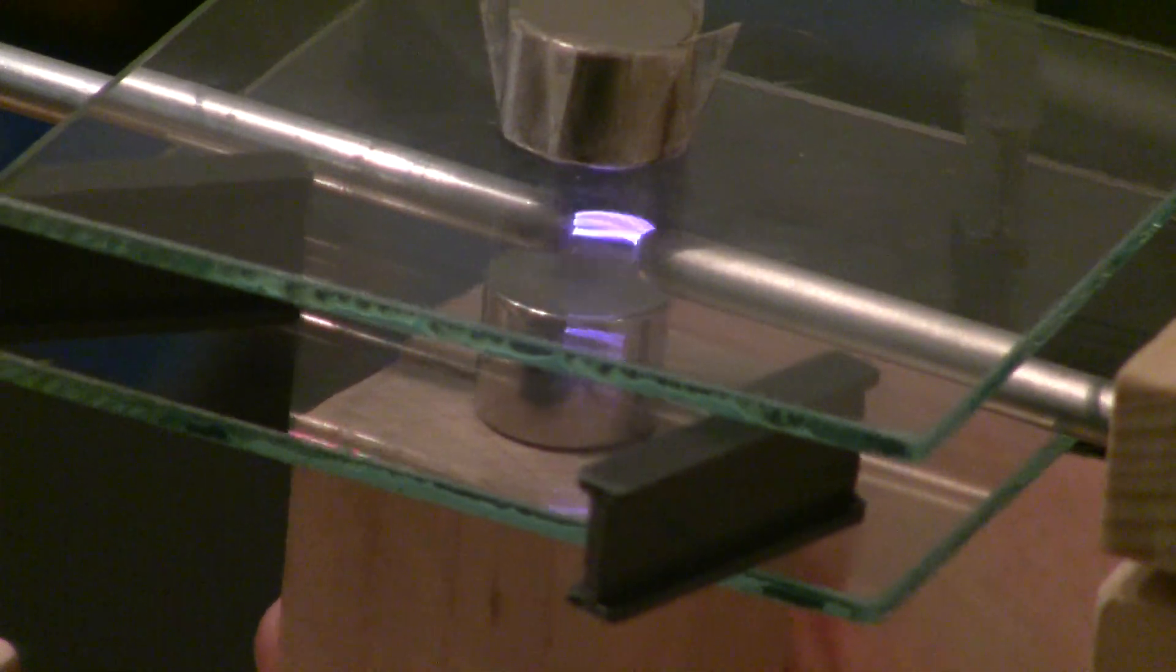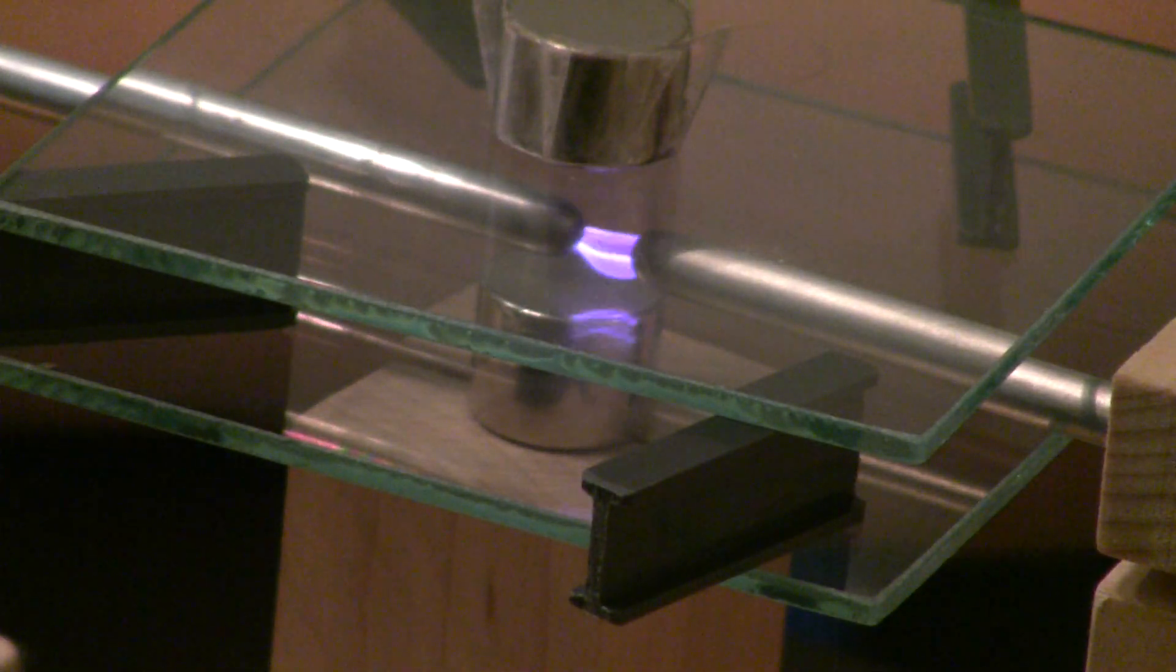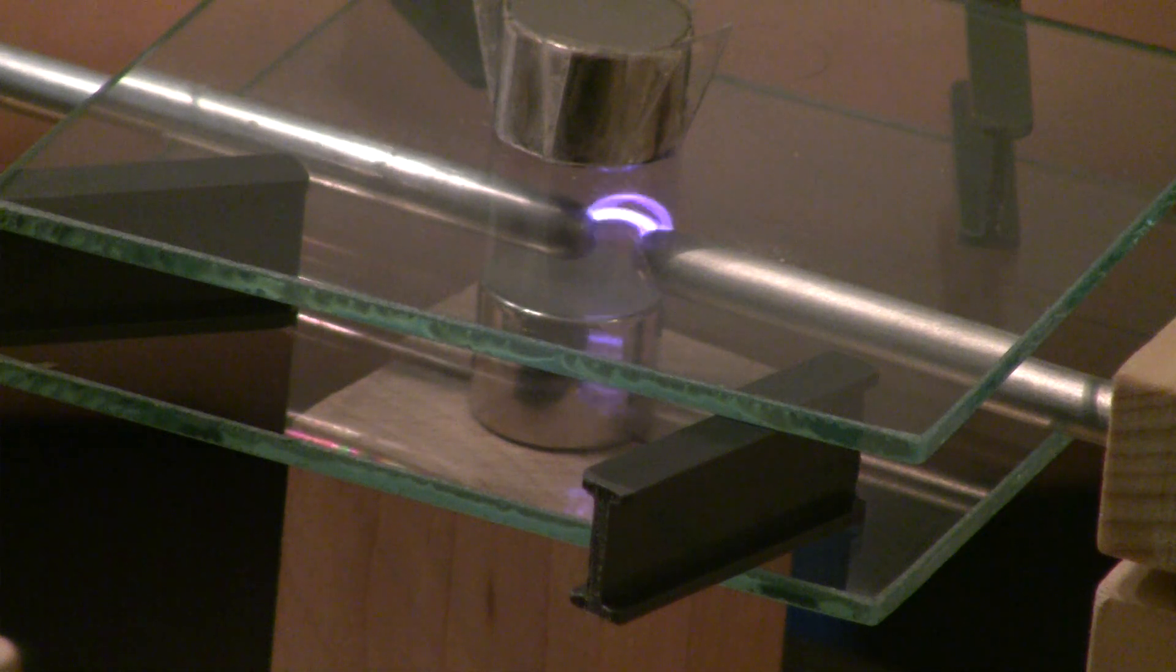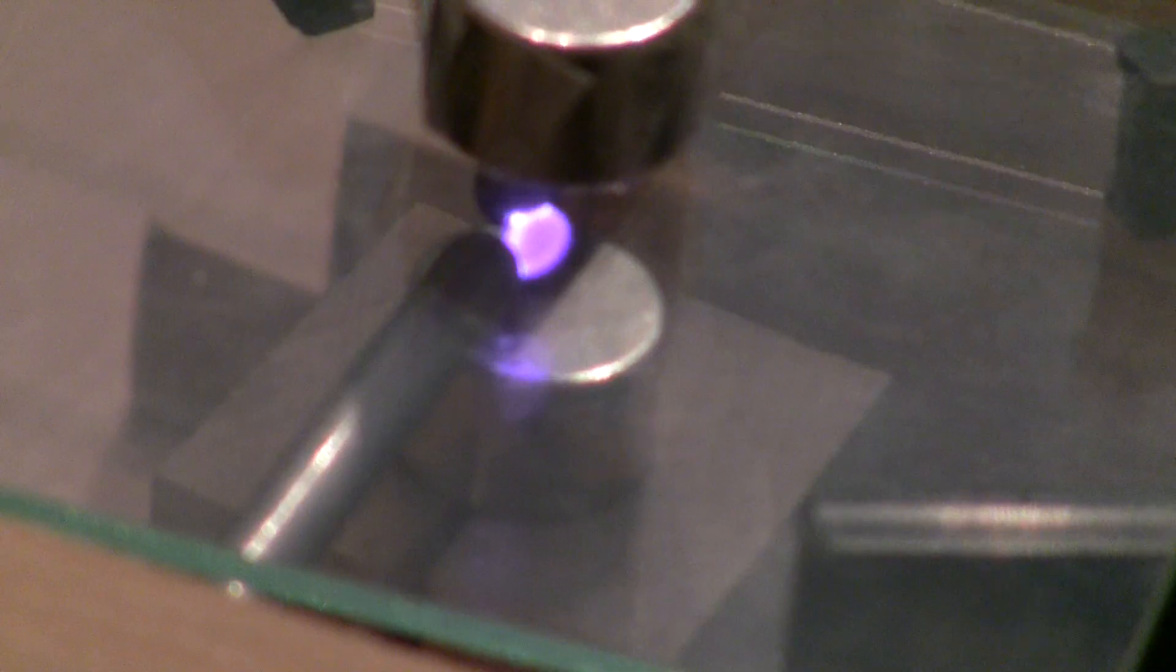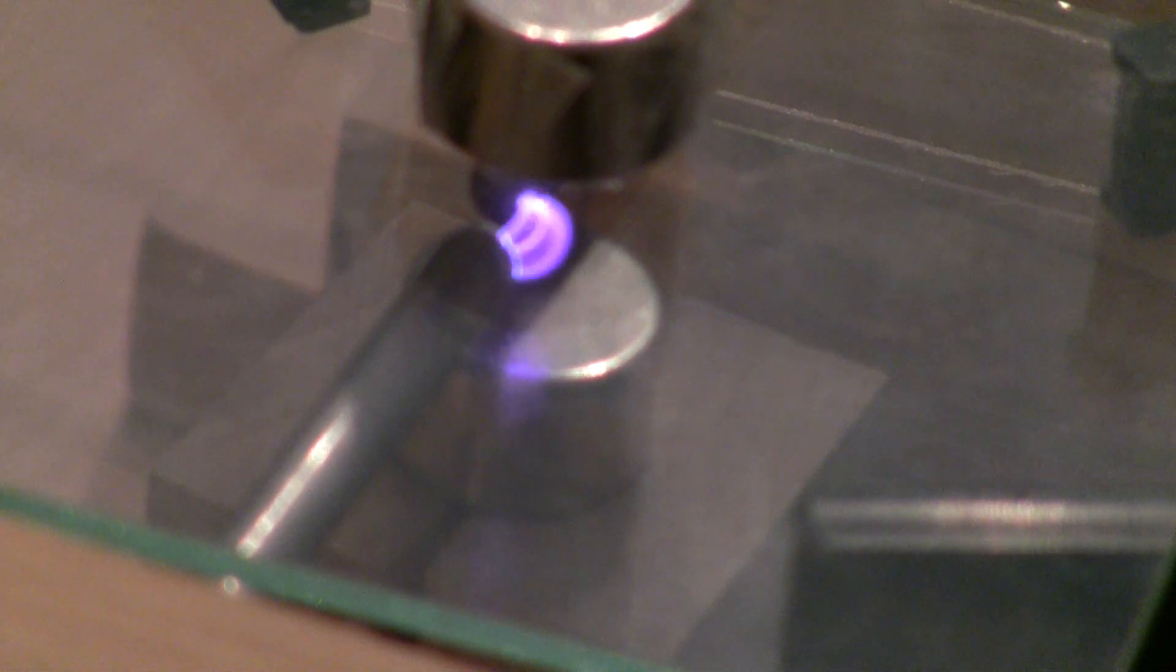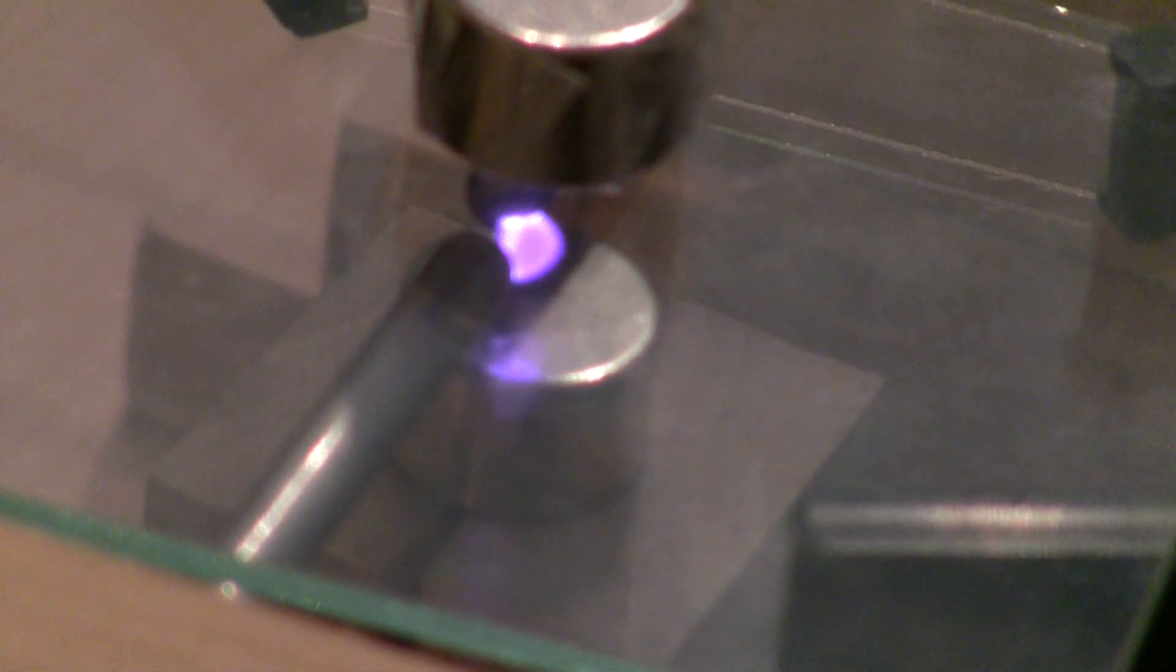So if my understanding is correct, with the magnetic field present and the electric field from the voltage difference between the electrodes, there's a Lorentz force that's perpendicular to both. That pushes the charged particles or ionized air, which is why the arc bends away when the magnetic field is present.